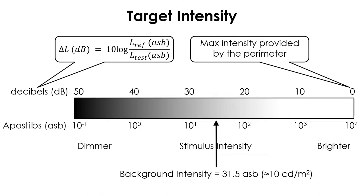Test locations where the patient is unable to see a stimulus of the highest possible light intensity that can be generated by a perimeter are assumed to be totally blind at those locations, even though they may still be able to see brighter lights if available. For those locations, a value of zero decibels is assigned. Therefore, when the range of stimulus intensity provided by a Humphrey machine is 0.1 to 10,000 ASB, that range corresponds to 50 to zero decibels, respectively.